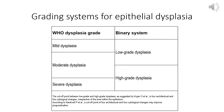Dysplasia grading is not very reproducible between different pathologists or observers. Some studies show good prognostic value, while others find poor association with outcome. For severe dysplasia, consensus grading after review by more than one pathologist may increase diagnostic reliability. Some advocate a binary system of high grade and low grade to improve reproducibility, but WHO still recommends the three-tier classification of mild, moderate, and severe.